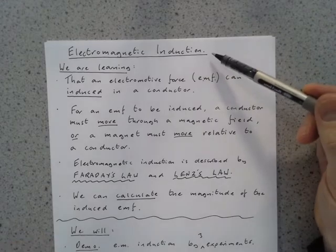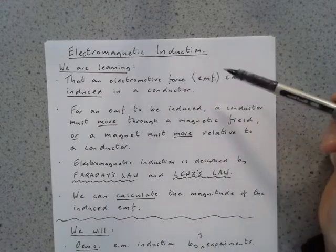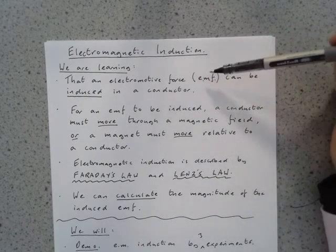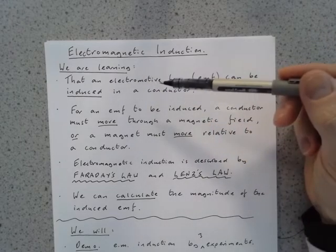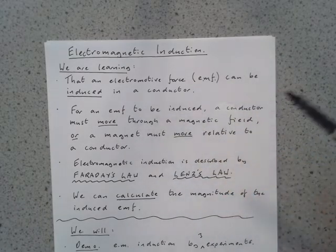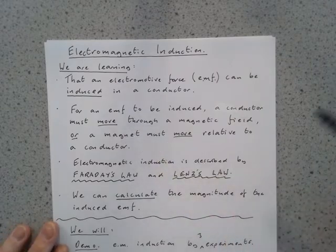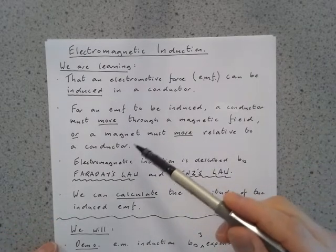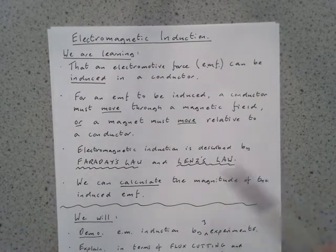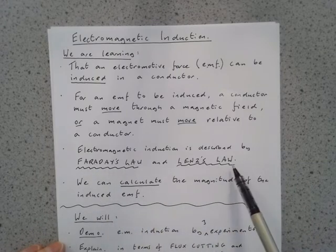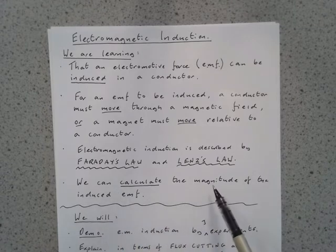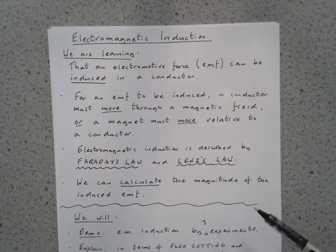This lesson is about electromagnetic induction. Here are the learning objectives. We're going to learn that an electromotive force, or EMF or voltage, can be induced or created in a conductor — a wire or a coil. For an EMF to be induced, a conductor must move through a magnetic field, or a magnet must move relative to a conductor. Electromagnetic induction can be described by two laws: Faraday's law and Lenz's law.